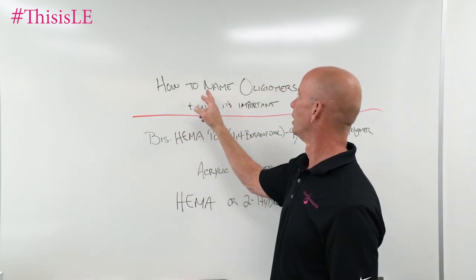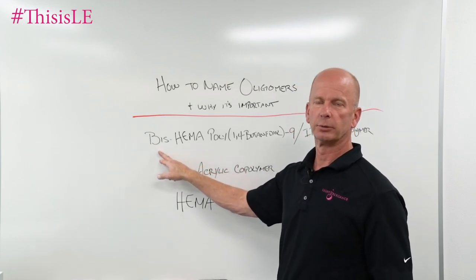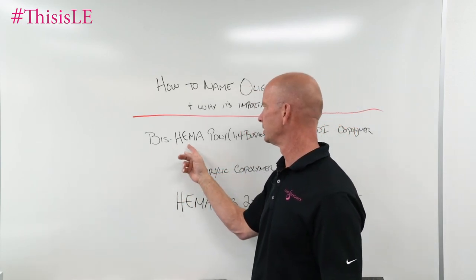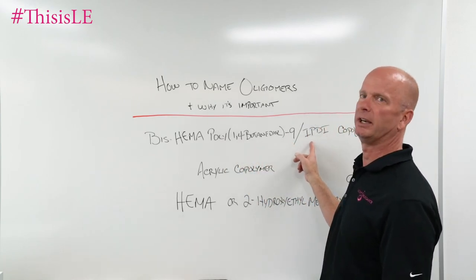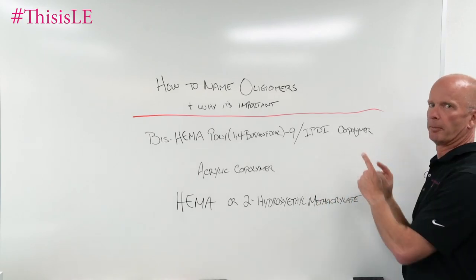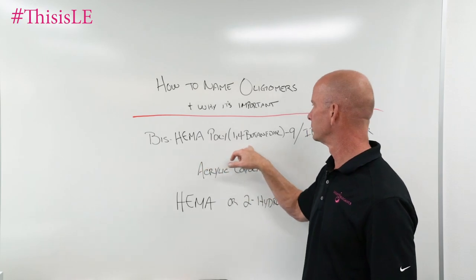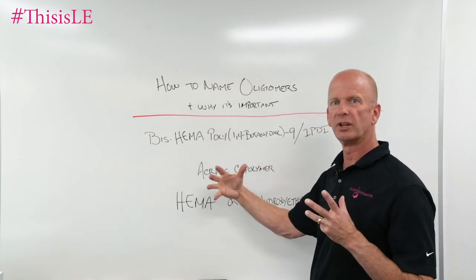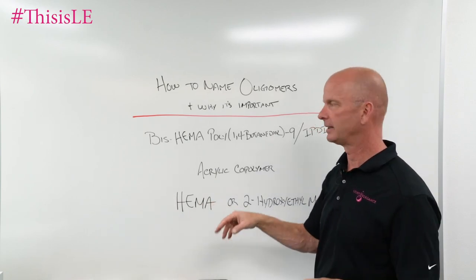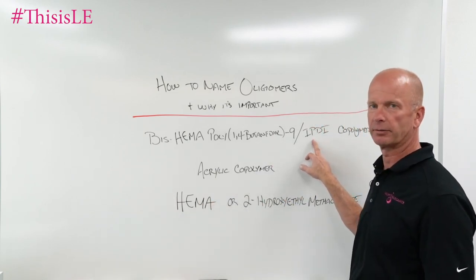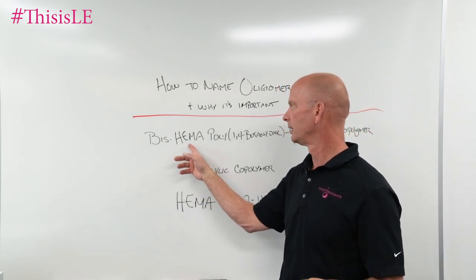So when we take a look at how we name oligomers and why it's important, one of the oligomers that we use in our gel systems is bis-HEMA-poly-1,4-butanediol-9/IPDI copolymer. So what does that mean? That means that we use 1,4-butanediol molecules — nine of them — we build a backbone. That backbone is then capped with IPDI, isophorone diisocyanate, as a capping agent, and then that is capped with HEMA.